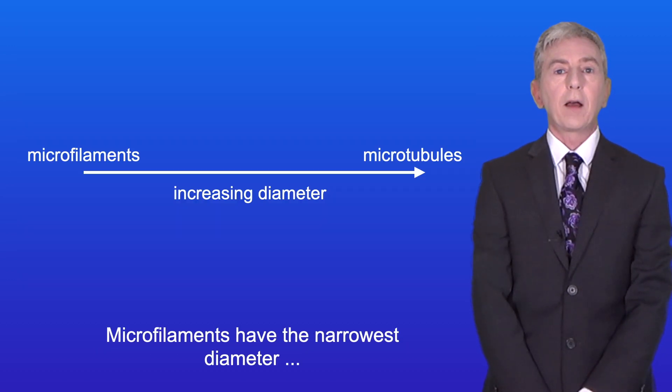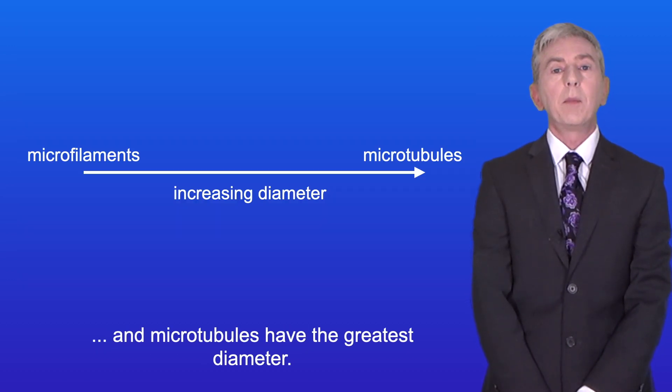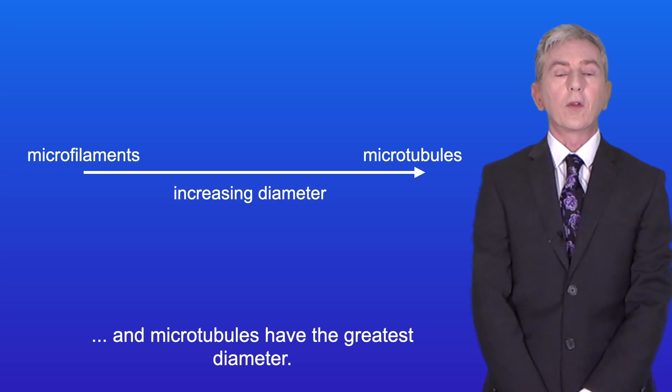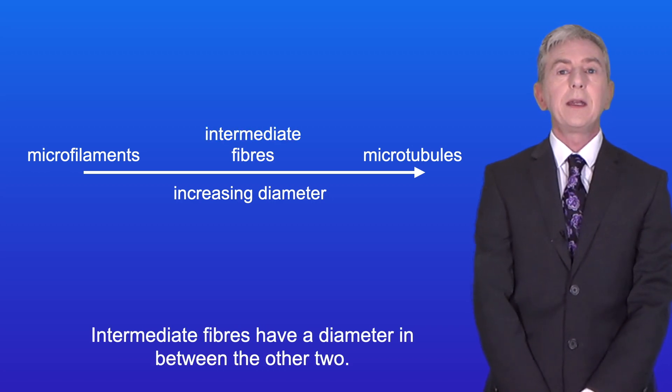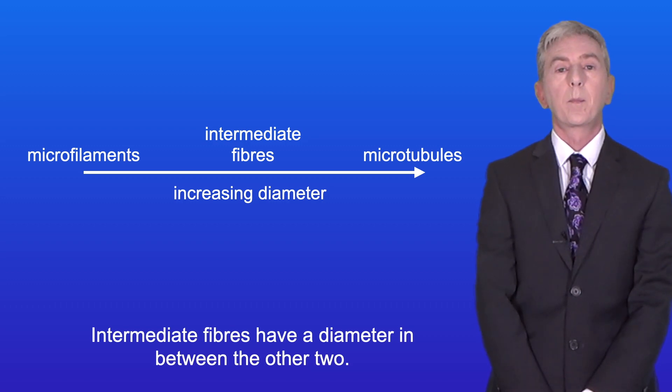Microfilaments have the narrowest diameter and microtubules have the greatest diameter. Intermediate fibers have a diameter in between the other two.